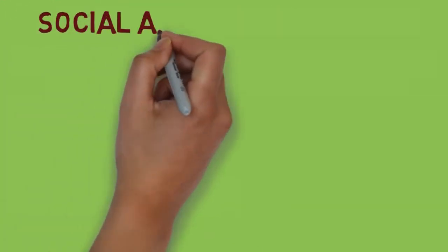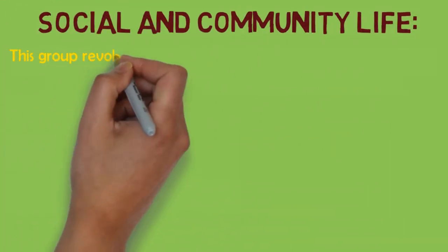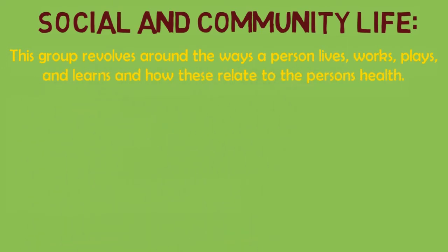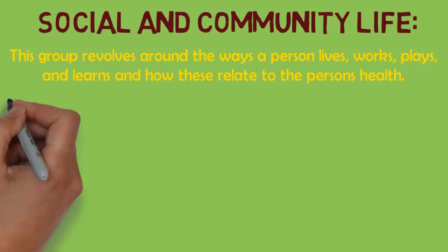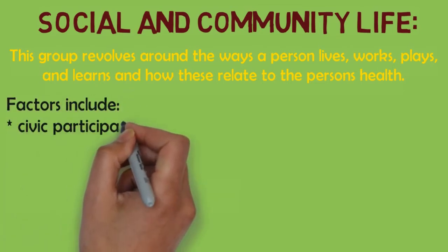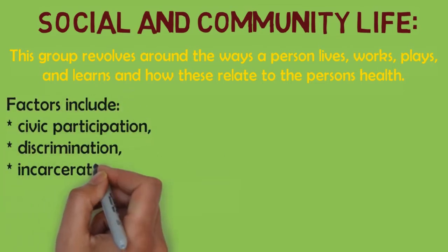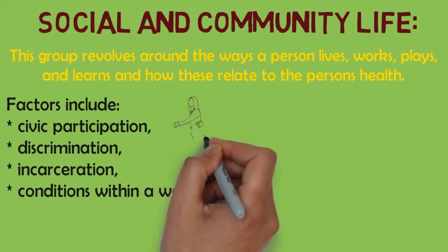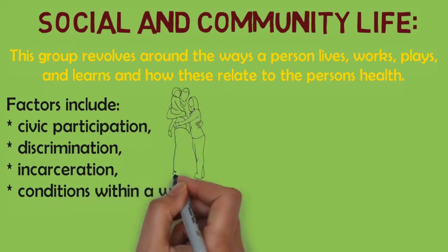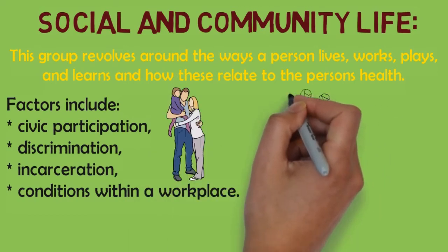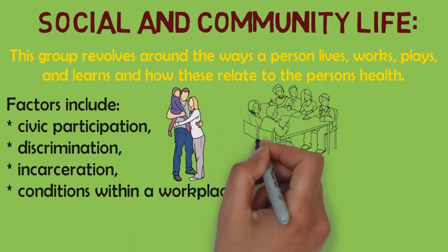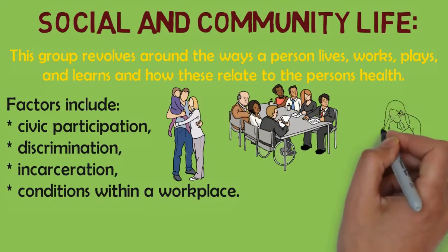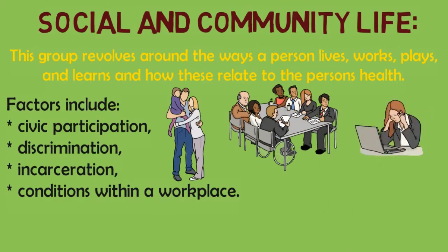The fifth group is social and community life. This group revolves around the way a person lives, works, plays, and learns, and how this relates to their health. Factors include civic participation, discrimination, incarceration, and conditions within a workplace. Interactions between individuals and their family members and co-workers can affect their health — for example, workplace conditions and discrimination can have an impact on people's mood and self-esteem.